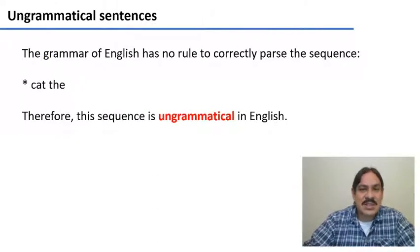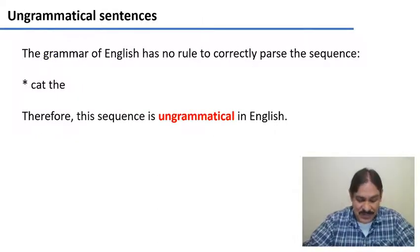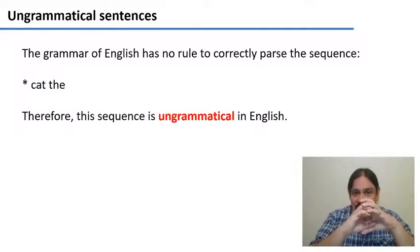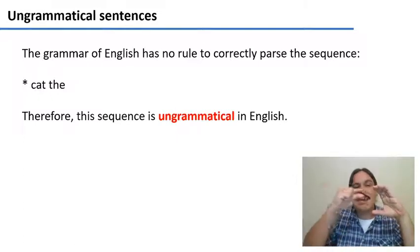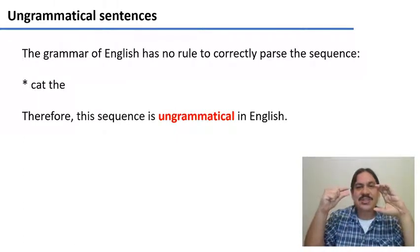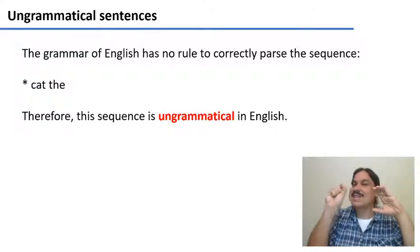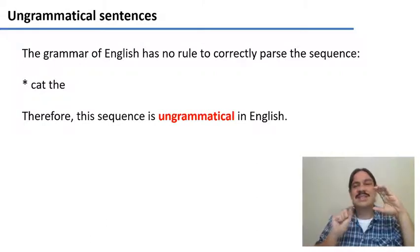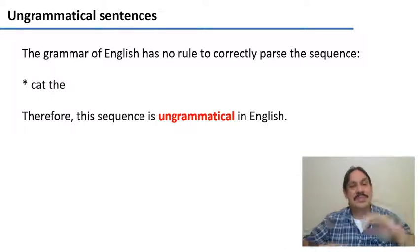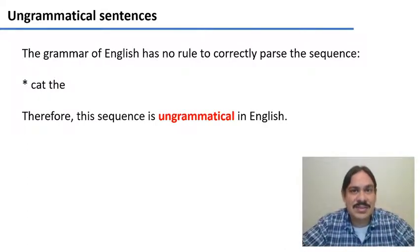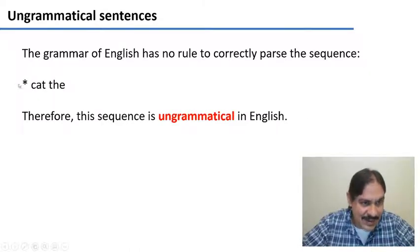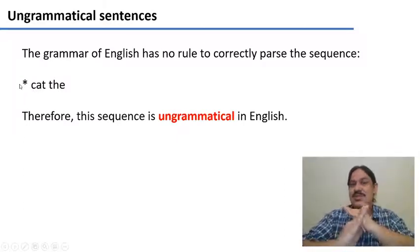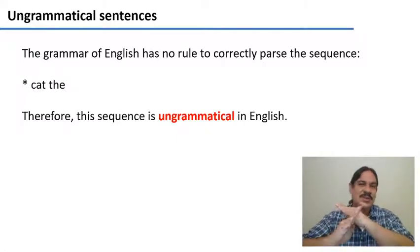We're going to call such sentences ungrammatical sentences. It means that the grammar of the language — the collection of all of the rules that you can use to generate trees — does not contain a rule that could generate the sequence 'cat the,' which has the sequence noun phrase, determiner. We're going to call this an ungrammatical sequence of English, and we're going to denote ungrammaticality with an asterisk. If we have an asterisk before a sentence, it means that it's ungrammatical — that it's not part of the syntax rules of English.